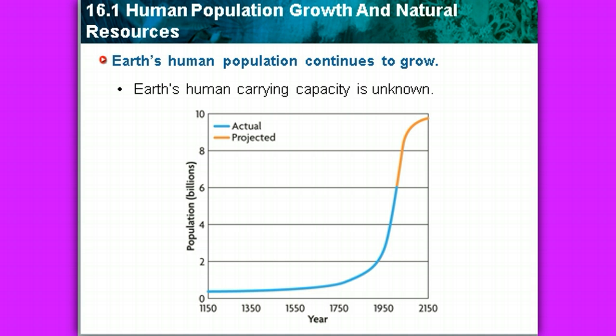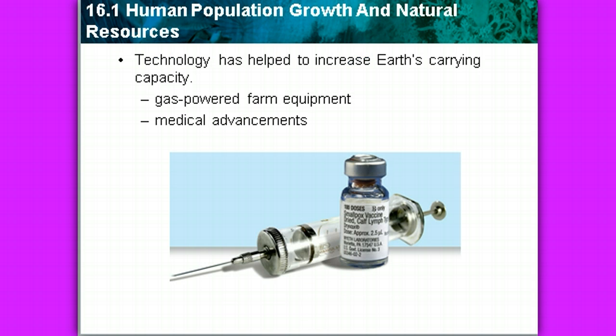Starting in about 1150 A.D., our population stayed pretty low even into the early 1900s. What do you think caused that big spike in population growth? Well, one of the reasons is technology.